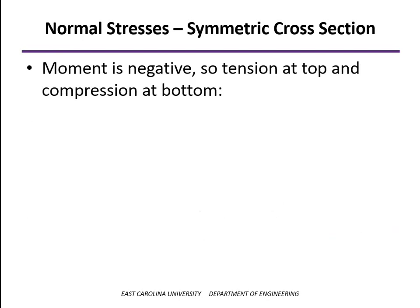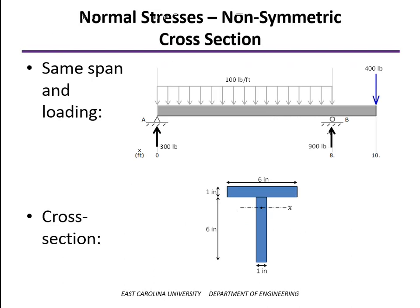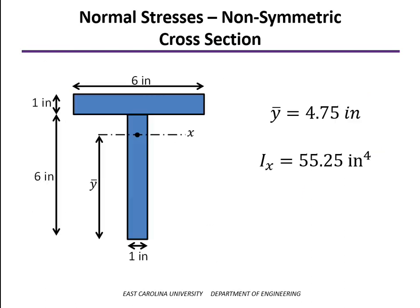Because the moment is negative at the point where it's 800 foot-pounds, we're going to have tension at the top and compression at the bottom, but equal magnitude. So if we're looking at failure criteria, 231 psi is the extreme stress. Now let's look at that same beam, but change the cross-section by removing the bottom flange — so instead of an I-beam, we have a T-beam, which is non-symmetric. From our earlier video on moments of inertia, we located the neutral axis as 4.75 inches above the bottom of the beam, and found the moment of inertia about that neutral axis as 55.25 inches to the fourth.